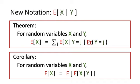Based on this new notation, we can state the following theorem. For random variables X and Y, the expected value of X equals the summation of E[X | Y = j] weighted by the probability that Y equals j. This is just the conditional expectation formula, where Y = j are disjoint events spanning the whole sample space.